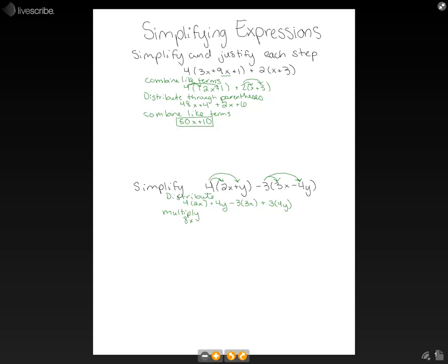4 times 2x will get 8x. Let's just have our 4y still. Minus 3 times 3x is minus 9x. And plus 3 times 4y is plus 12y.